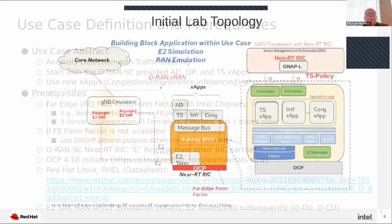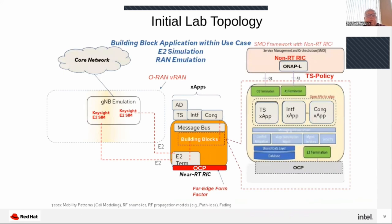The lab initially looks like this: we have the gNodeB emulation with E2 simulation on the left. In the middle is the representation of the edge data center — the orange block — with OCP and the building blocks associated with OCP, the near real-time RIC running on OCP, and then the X-Apps that are part of the use case on top of all that infrastructure.